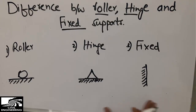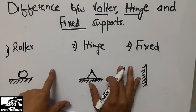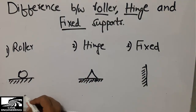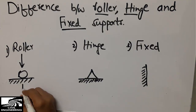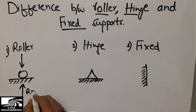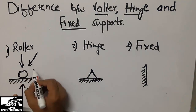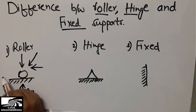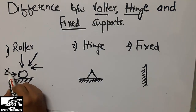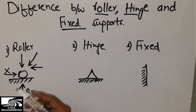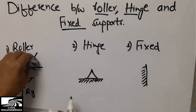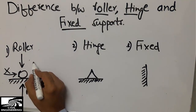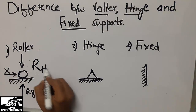So what are the reactions provided by these three different types of supports? The roller support can only resist vertical loads. If the load is coming on the structure in the vertical direction, it will only provide resistance in the vertical direction, represented by Ry. If a horizontal load is coming, it will not provide any resistance, so the horizontal reaction Rx is equal to zero.